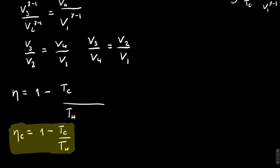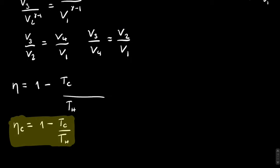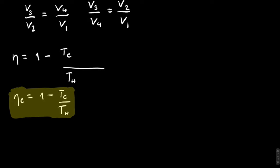This efficiency is always going to be less than one, because for it to equal one, Tc would have to be zero — infinitely smaller than Th — which never happens in any real-world scenario. You can get pretty close, but you can never achieve 100% efficiency. This is another expression of the second law of thermodynamics: the Carnot efficiency is always less than one.